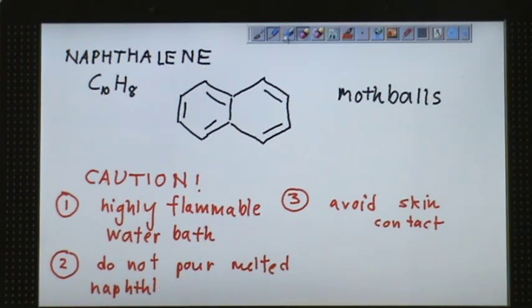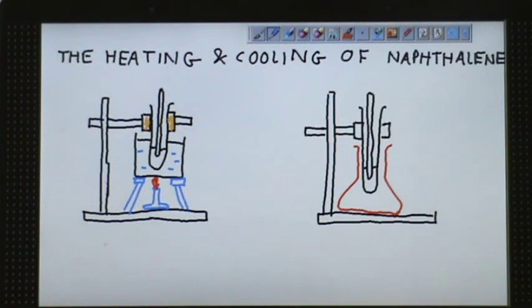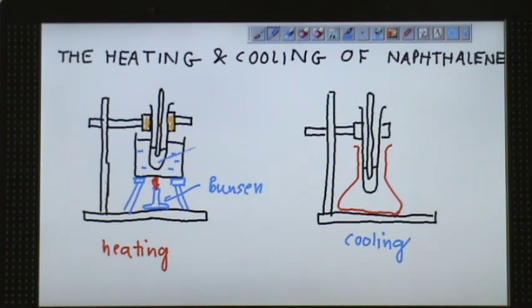Let's begin with looking at the diagram first. This will be the setup for naphthalene. Here will be the heating part and the other side is the cooling part. Let's label them one by one and find out what you can do with them. You have a tripod stand and the Bunsen burner here.